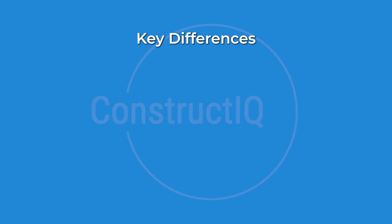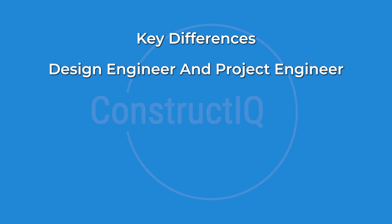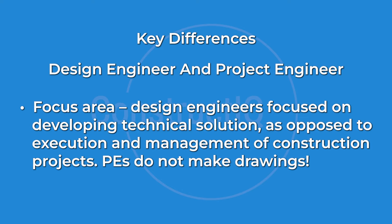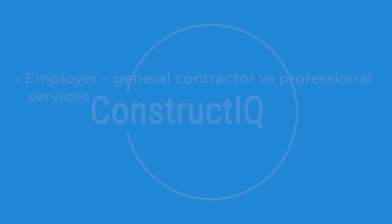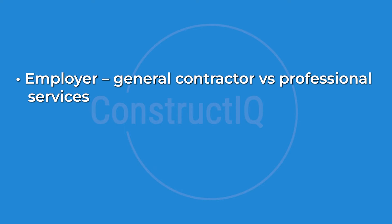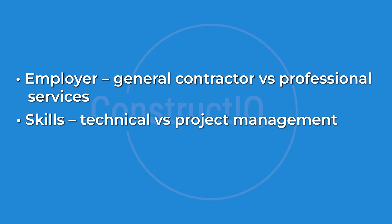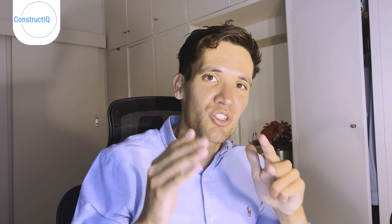So what are the key differences between a design engineer and a project engineer? Number one is focus area. The design engineer focuses on producing the drawings and specifications; the project engineer focuses on delivering the works in accordance with those drawings and specifications. One is a technical engineering job, one is a project management job. Number two is employer: design engineers are typically employed by professional services firms, while project engineers are employed by contractors. Number three, the fundamental skill set is different — technical engineering skills versus construction project management skills.